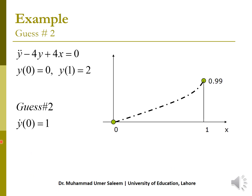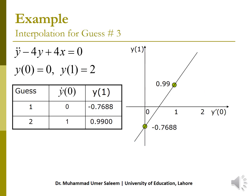Then we make the second guess — another raw guess. I take y'(0) = 1. This ODE together with y(0) = 0 and y'(0) = 1 becomes an initial value problem, which we solve using the second order RK method. So now we have two values: with the first guess y'(0) = 0, we get y(1) ≈ −0.7688; with the second guess y'(0) = 1, we get y(1) ≈ 0.99.